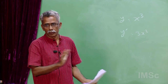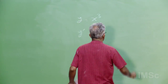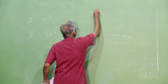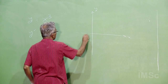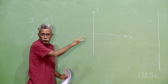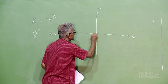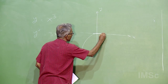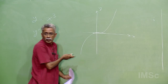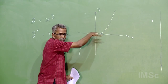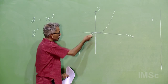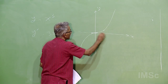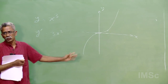Derivative vanishing only tells you that there is a horizontal tangent. The curve crosses the x-axis, becomes tangential, and then increases again. There is no contradiction. Just because the derivative vanishes, you cannot say the function is not increasing.